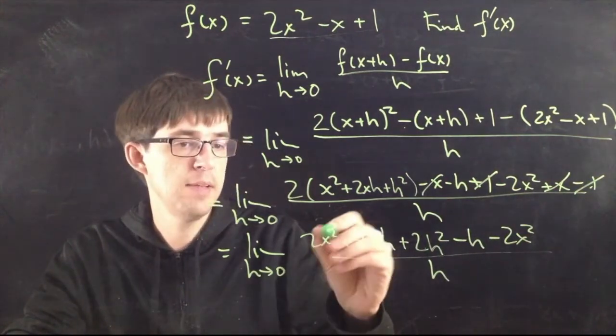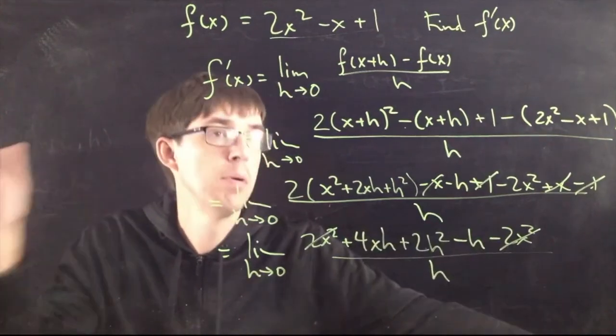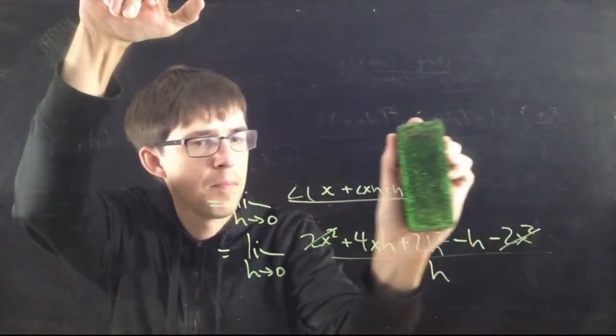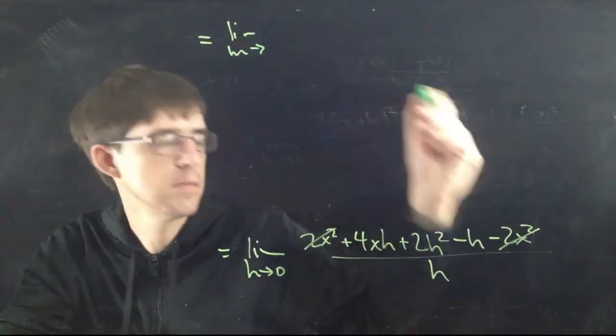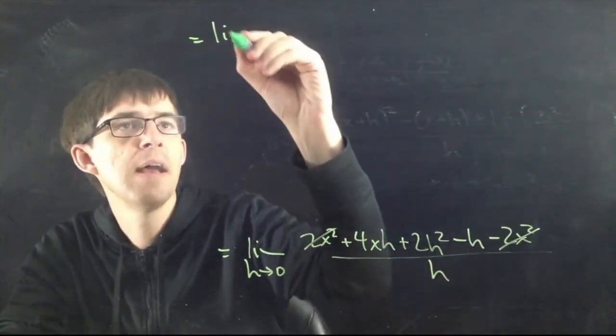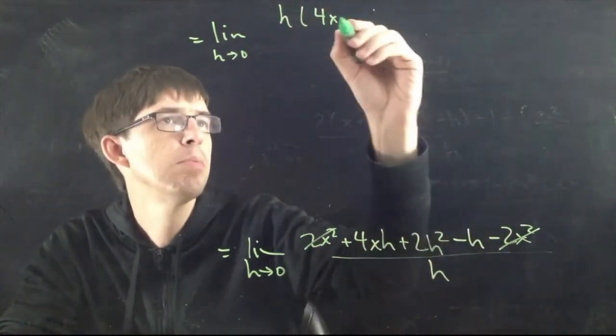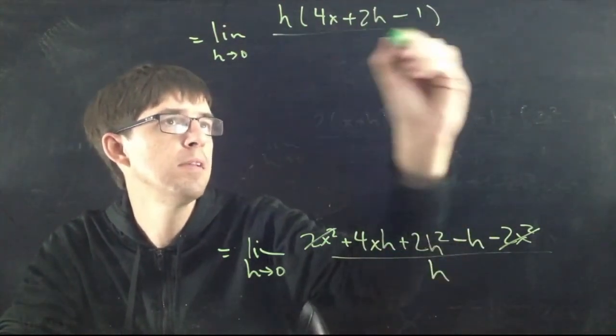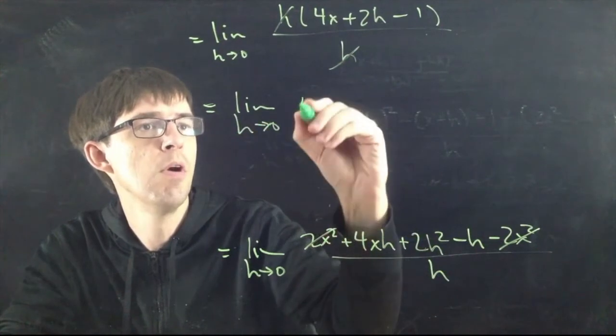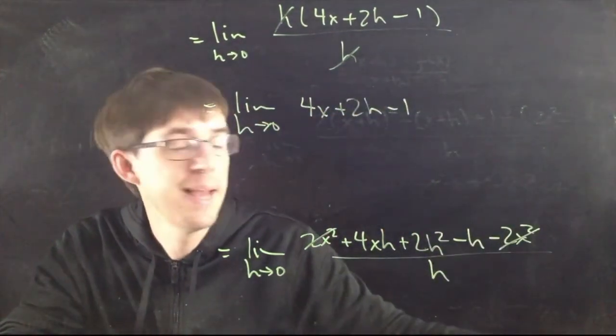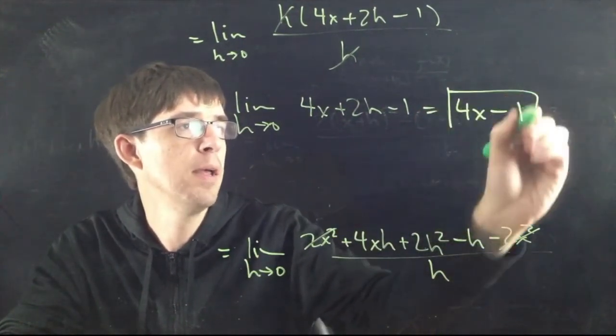Can we cancel anything now? Yeah, I think so. Cancel this and this. I guess that's it, actually. As we usually do, factor the h out on top. Factor the h out of the top. We remain 4x + 2h - 1, right? Divided by h. And then we cancel the h's as we always do. We are left with lim h→0, 4x + 2h - 1. And finally, the last step, as always, we plug the limit in. Plug in 0 for h. I get 4x - 1. And that's the answer.